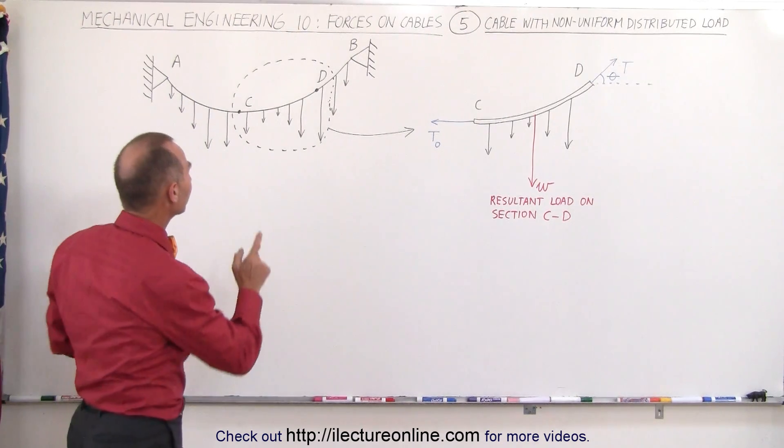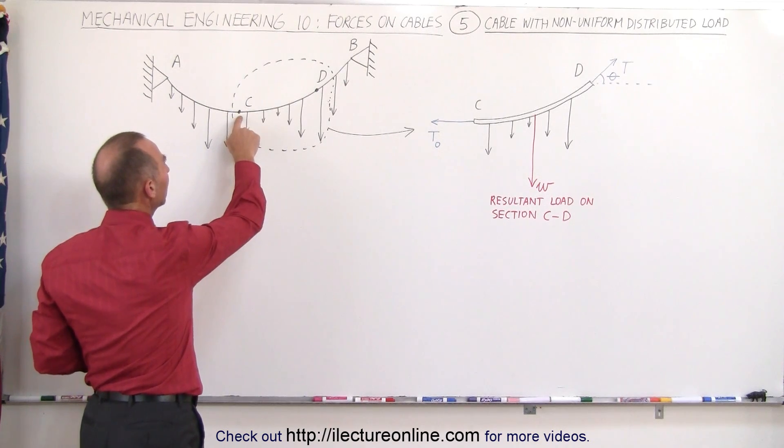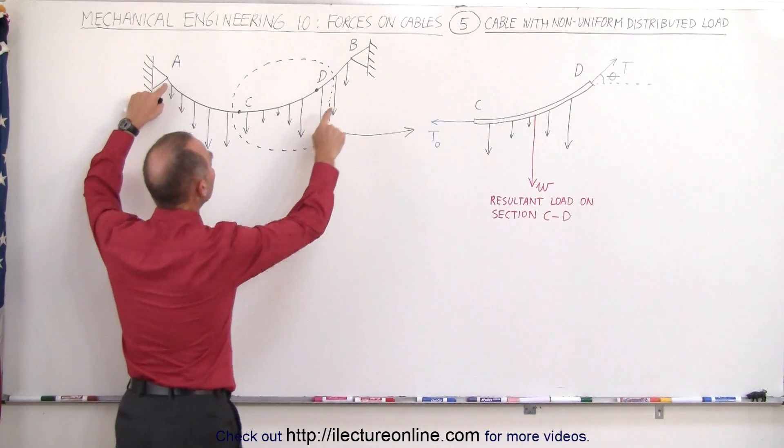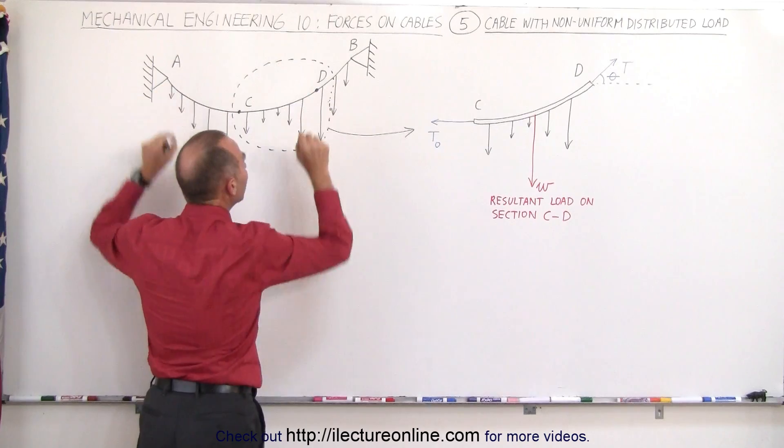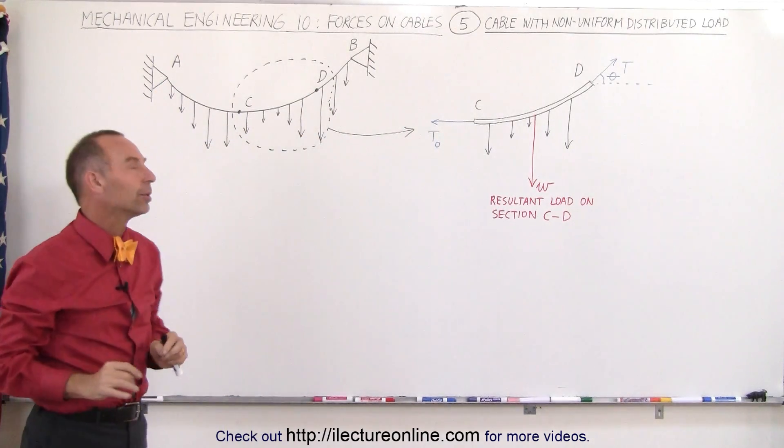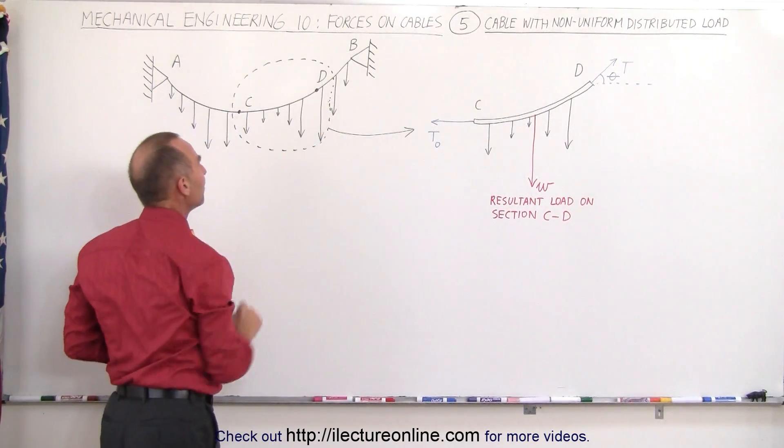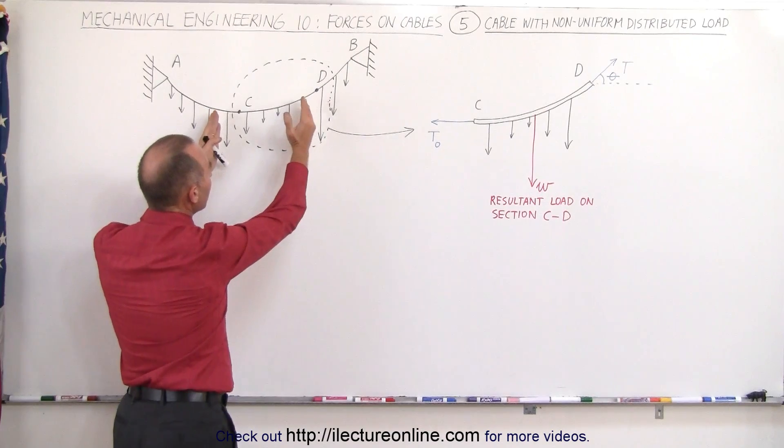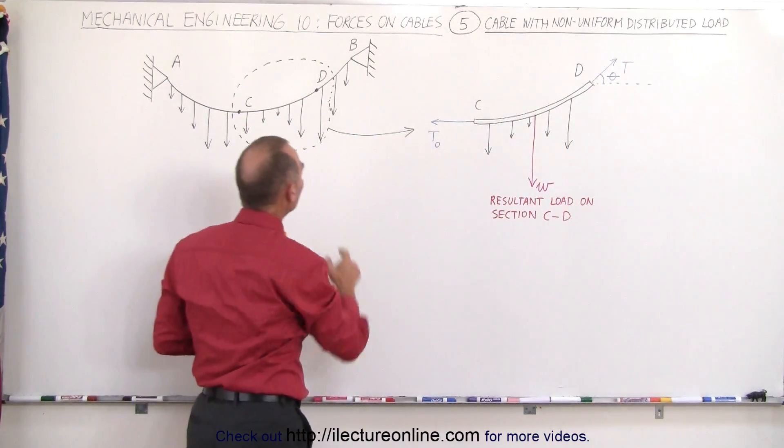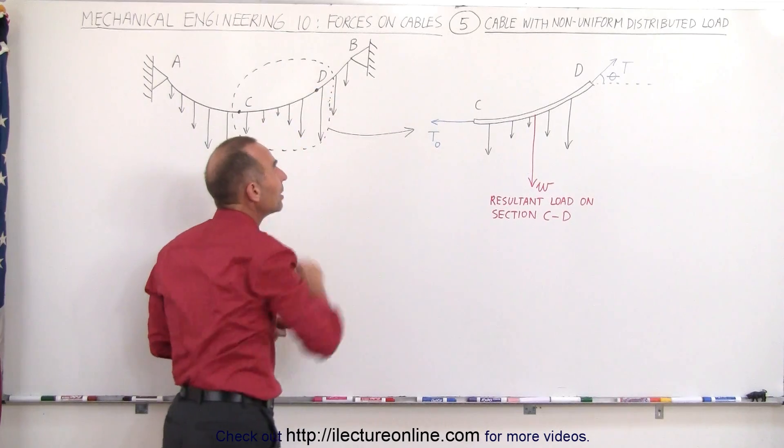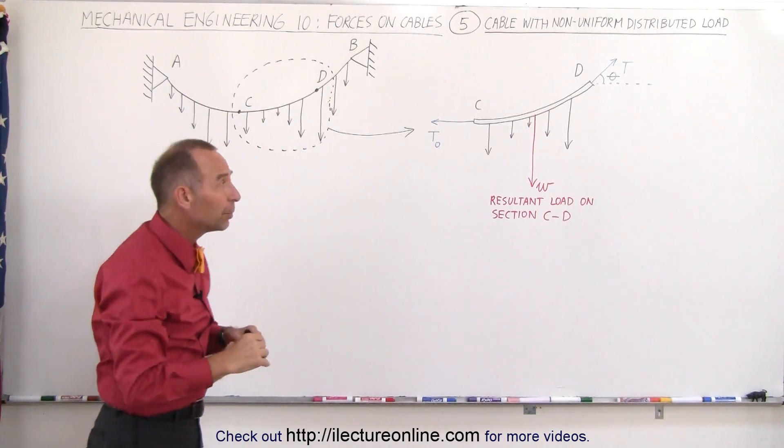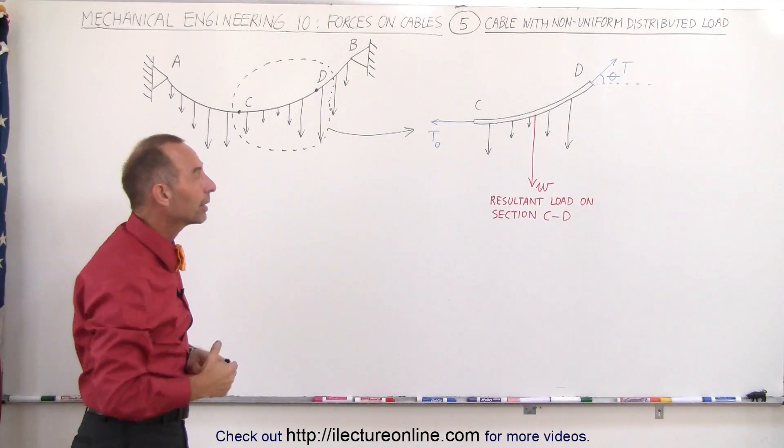The best thing to do is to first find the lowest point in the cable, label that C. We still have the end points A and B, and then we pick any other point on the cable, let's label that one D.